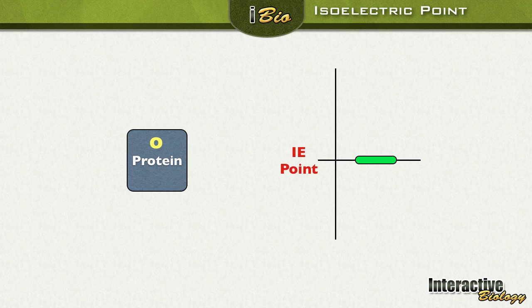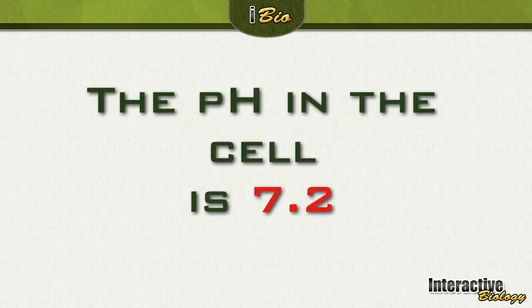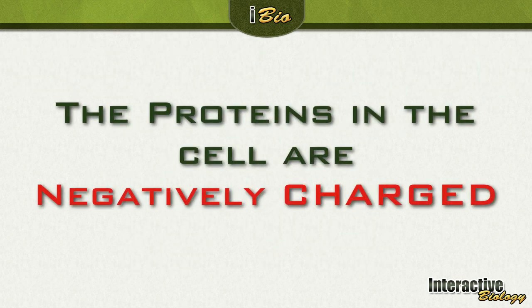Here we have a protein and you'll see the number zero showing that this protein has no charge. Why does it have no charge? Because the pH is at the isoelectric point. Now look what happens as I move away from this isoelectric point. If I go above the isoelectric point, that's going to give the proteins a negative charge. If the pH goes beneath the isoelectric point, it gives the protein a positive charge. Now remember, the pH in the cell is approximately 7.2, so that's going to cause the proteins inside the cell to have a negative charge.